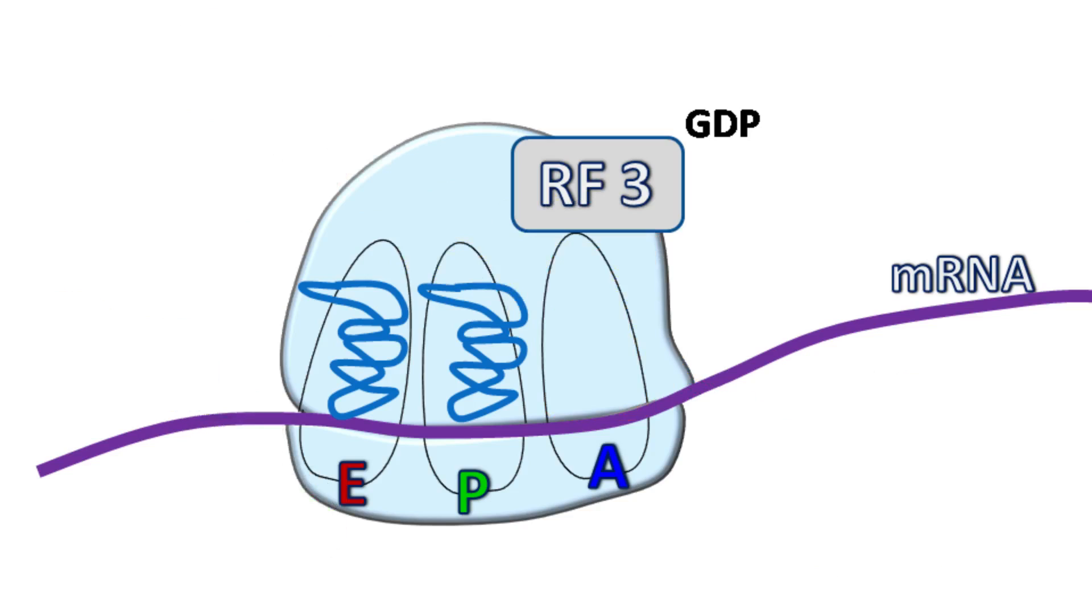In the next step, GDP is replaced by GTP, which finally releases RF3.